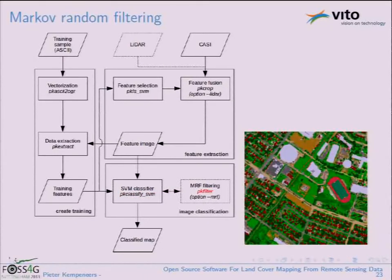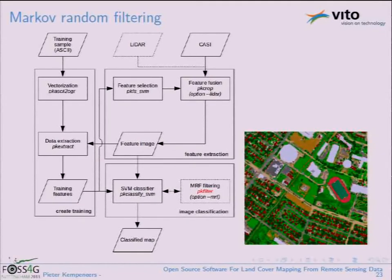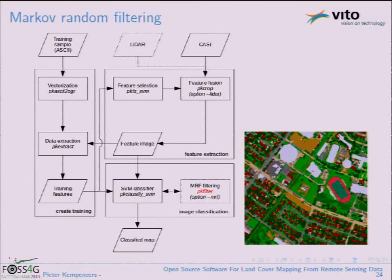A final post-processing step is Markov random field filtering, part of the PK Tools filtering suite. This filter uses contextual spatial information to remove the salt-and-pepper effect typical of raster-based, pixel-by-pixel classification. By clumping classes together spatially, it produces a more homogeneous, cleaner result.